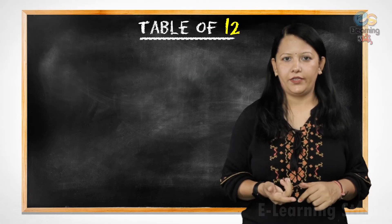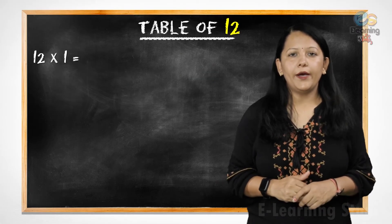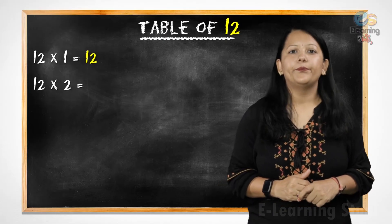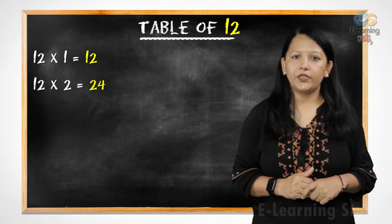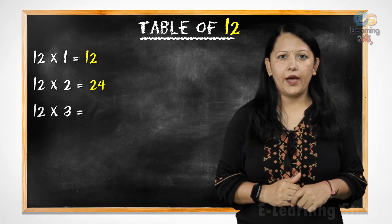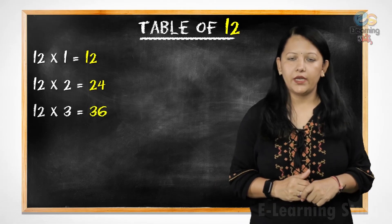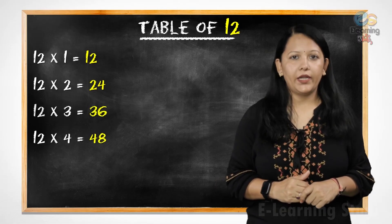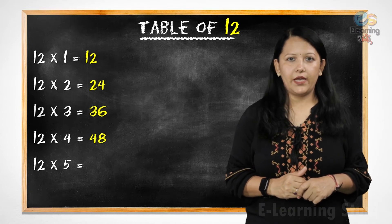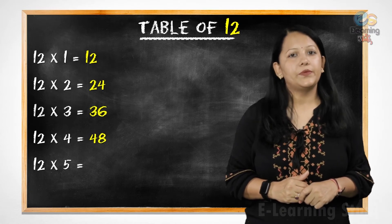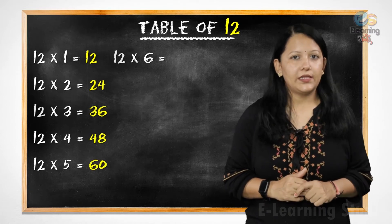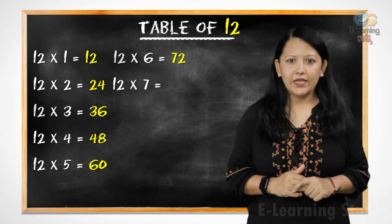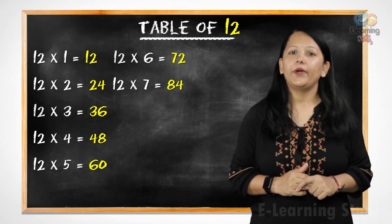Let's revise it. 12 ones are 12. 12 twos are 24. 12 threes are 36. 12 fours are 48. 12 fives are 60. 12 sixes are 72. 12 sevens are 84.